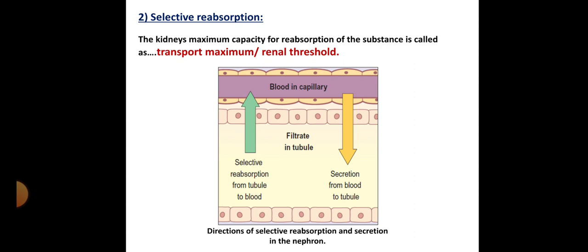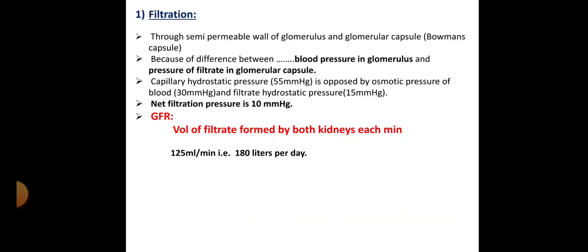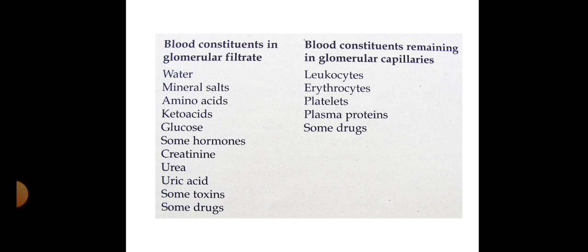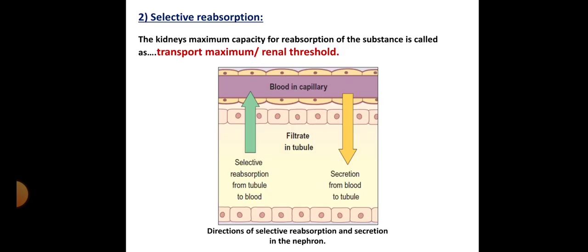After selective reabsorption, the third phase in urine formation is tubular secretion. While the filtrate is moving from the PCT, DCT, and loop of Henle down through the nephron, secretion of some ingredients from the blood into the tubule occurs — this is called tubular secretion. In summary, the three phases of urine formation are: filtration, selective reabsorption, and tubular secretion.